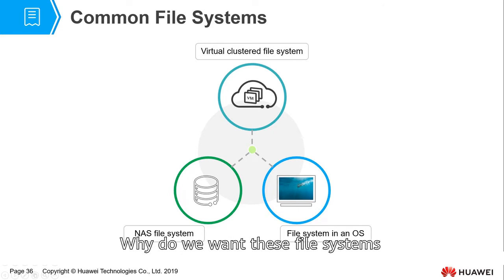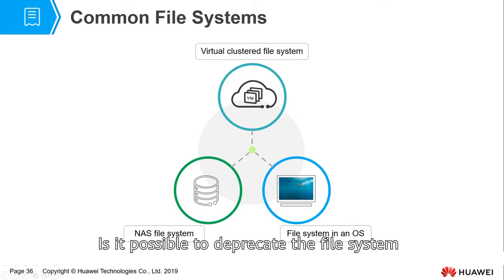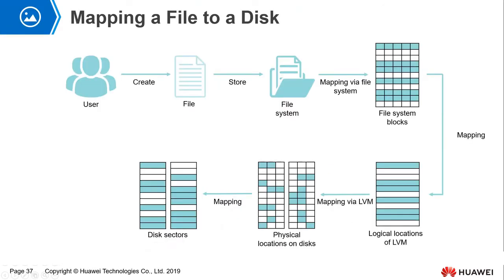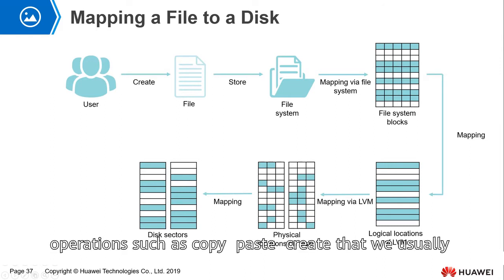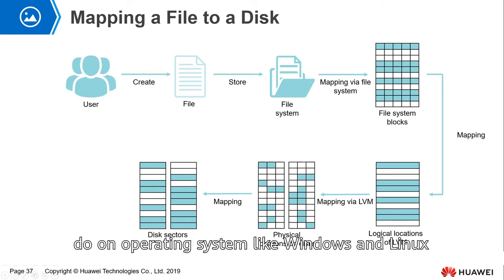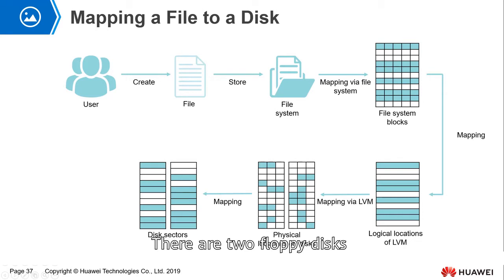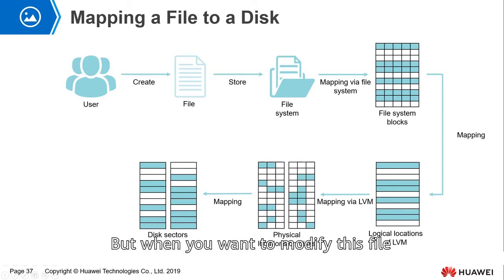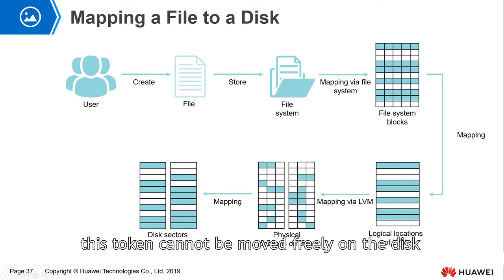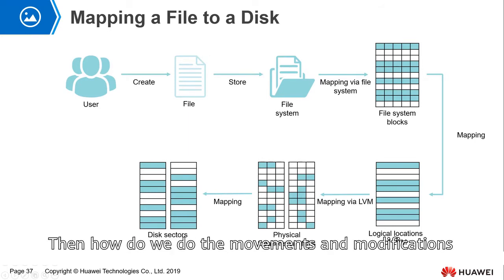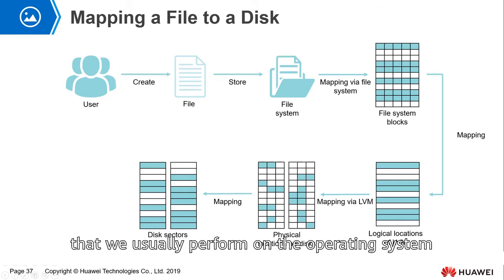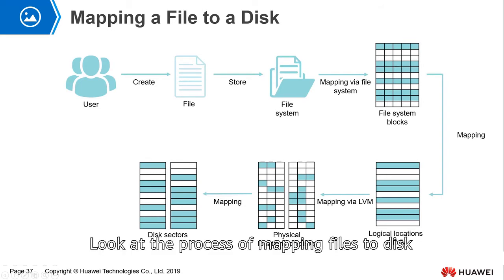Why do we need these file systems? Is it possible to do without them? Generally speaking, operations such as copy, paste, and create that we usually do on operating systems like Windows and Linux rely on the file system. How does this work? There are two areas on a disk. Every time you write data, you leave a mark on the disk. But when you want to modify a file, that token cannot move freely on the disk. So how do we perform the movements and modifications we usually do on the operating system? Look at the process of mapping files to disk.